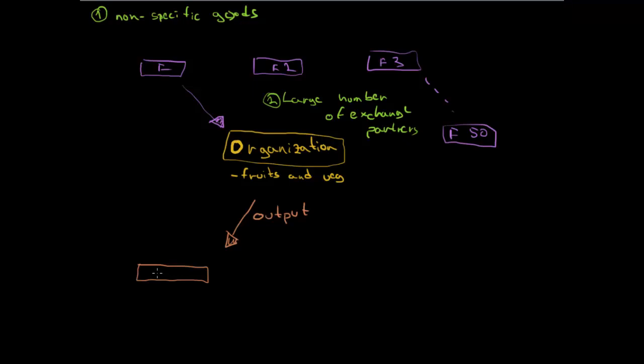And here we have also large number of trading partners or exchange partners, so here is maybe vegetable market, here is some supermarket, and we can continue until maybe number 50 again. So this is the important part, not just the suppliers but the exchange partners, both sides, our input and our output side as well.